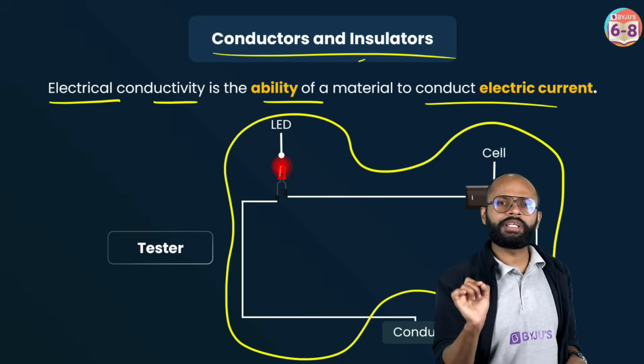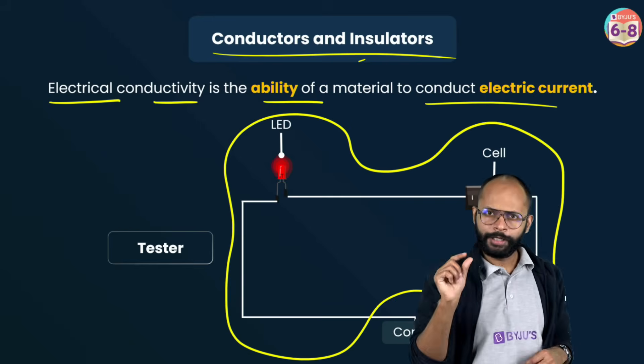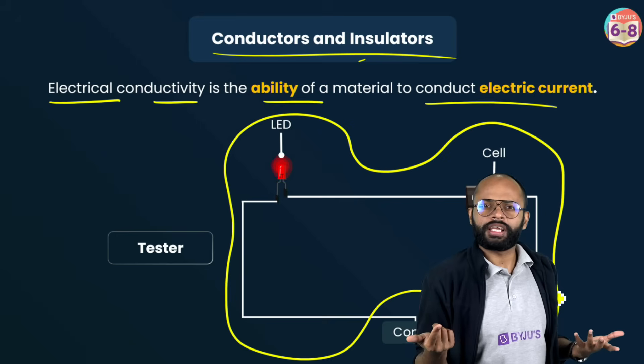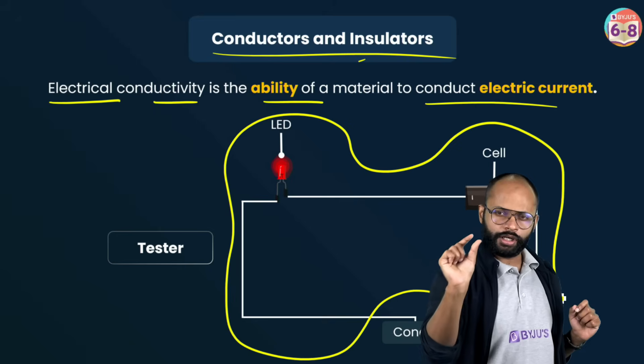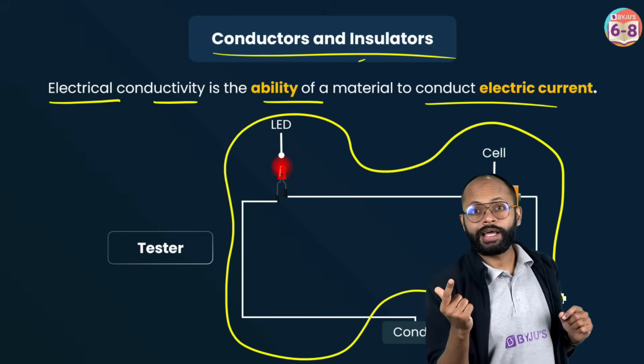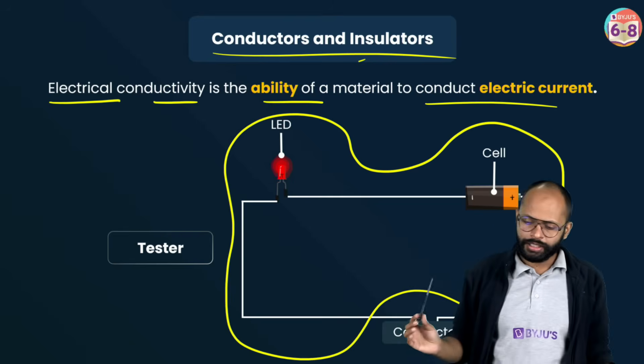If this conductor allows current to pass through it, current will flow through the whole circuit means the LED will glow. But if this is not a conductor, current will not flow, the LED will not glow. So the LED is telling you that the current is flowing. If you literally go with the name tester, the thing which you have in your house, that is also a tester. The electrician will come and put it in the socket. It is glowing. Ah, it is live.